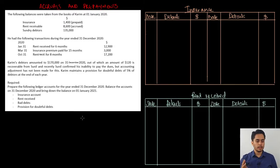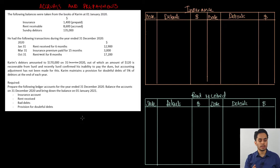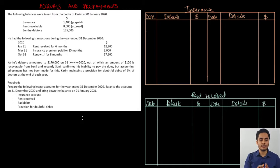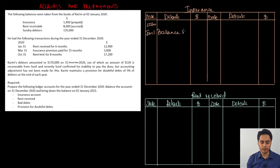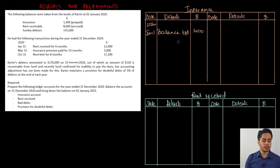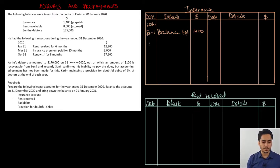When preparing the insurance account, let's read all the information we have and then put it into the account. The balance on 1st January was $1,400 prepaid. A prepaid balance for an expense like insurance would be a current asset for the business in the previous year, meaning the insurance account would have a debit balance — all prepaid expenses have debit balances. So on the debit side, I'll write: Jan 1, balance brought down $1,400. During the year, on 31st March, insurance premium was paid for 15 months at $3,000. Any payment is recorded on the debit side of the expense account, so on the debit side: March 31, bank, $3,000.